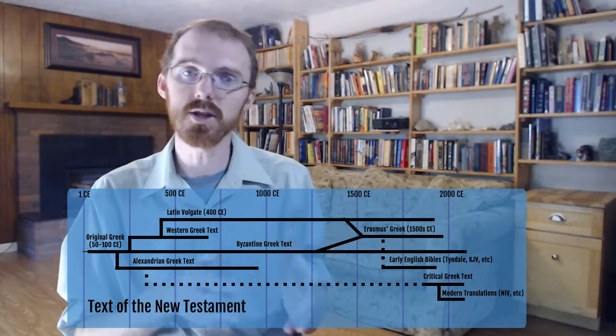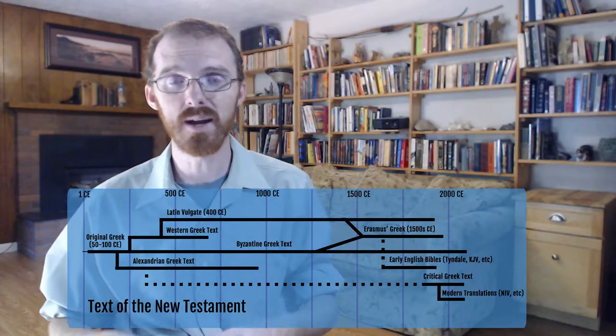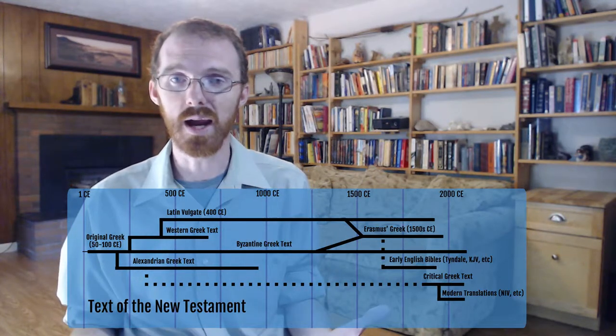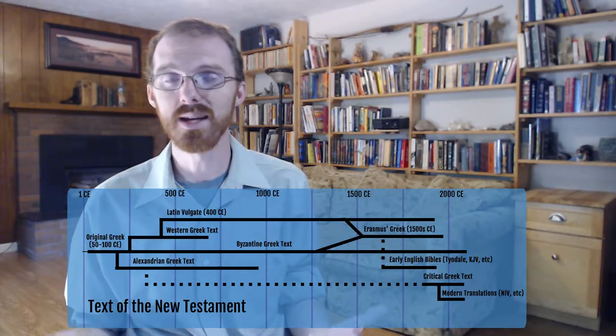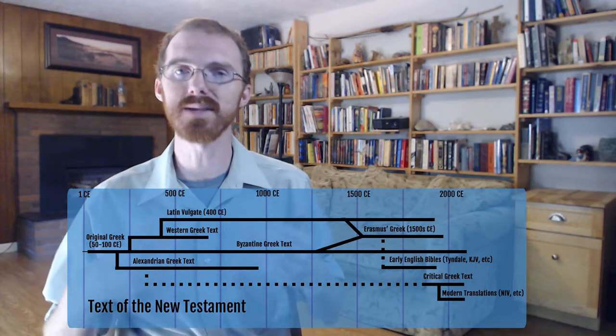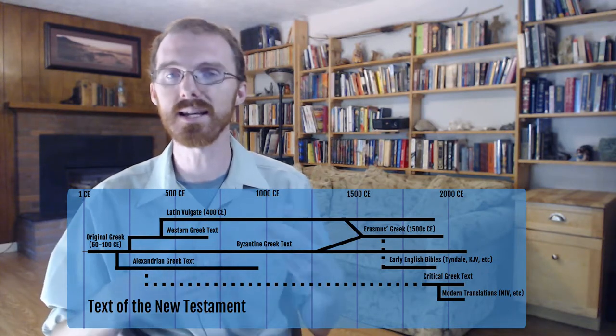Once again, the difference in our English translations comes down to a difference in the underlying text that they use, and one branch has something that the other one does not. In general, the newer the text and the more times that it has been copied, the more has gotten added to it.